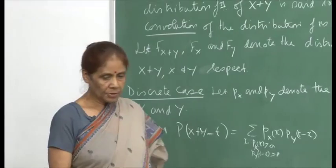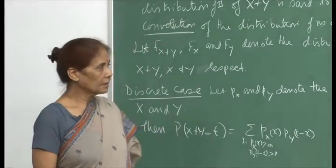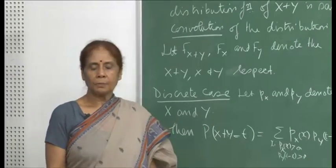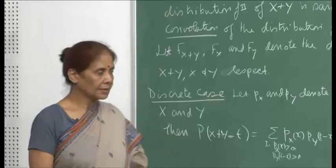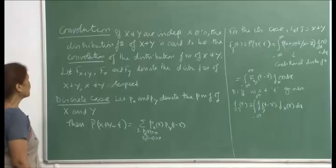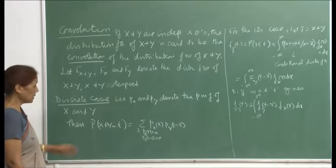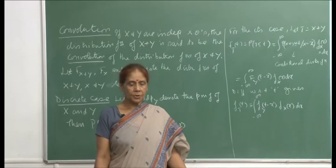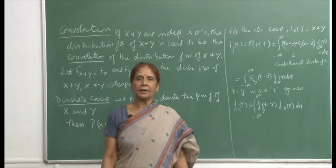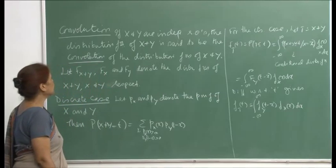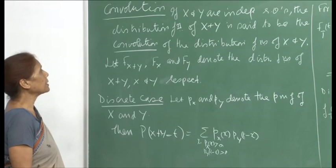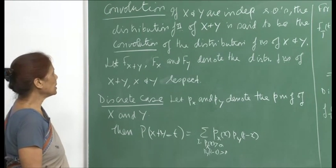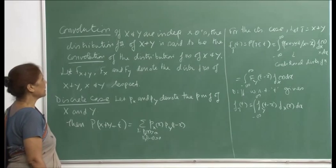In this lecture I will be talking about convolution, which is one of the tools we will use — just like MGF — to sometimes compute the distribution function and the density function for different kinds of random variables or functions of random variables. Mostly convolution is used for computing the distribution function of sums of random variables. The definition says that if X and Y are independent random variables, the distribution function of X plus Y is called the convolution of the distribution functions of X and Y.